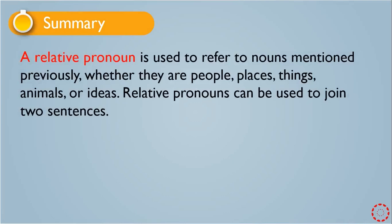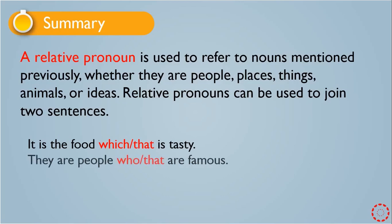At the end we have the summary. A relative pronoun is used to refer to nouns mentioned previously, whether they are people, places, animals, or ideas. Relative pronouns can be used to join two sentences. For example: 'It is the food which is tasty' or 'It is the food that is tasty.' 'They are people who are famous' or 'They are people that are famous.'